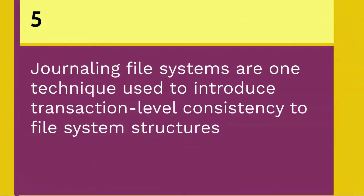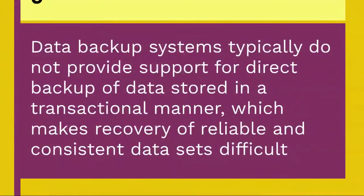Journaling file systems are one technique used to introduce transaction-level consistency to file system structures. General transactions are not exposed to programs as part of the OS API; they are only used internally to ensure consistency at the granularity of a single system call. Data backup systems typically do not provide support for direct backup of data stored in a transactional manner, which makes recovery of a reliable and consistent data set difficult.